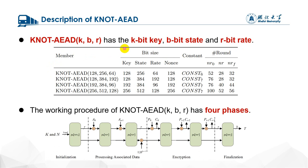According to the difference of the length of K, state, and root, KNOT-AEAD consists of four members. The corresponding parameters are listed in this table. The working procedure of KNOT-AEAD is composed of four phases: initialization phase, processing associated data phase, the encryption phase, and the finalization phase.